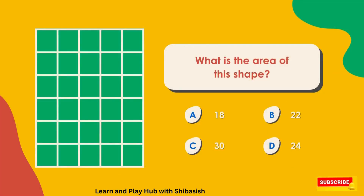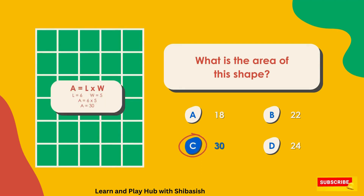What is the area of the shape? Option A: 18. Option B: 22. Option C: 30. Option D: 24. The correct answer is option C: 30.